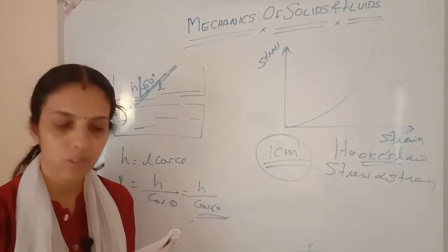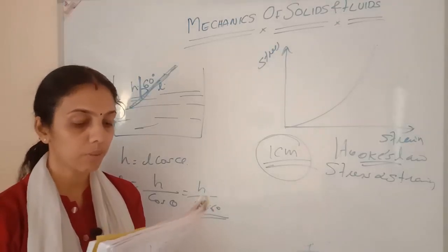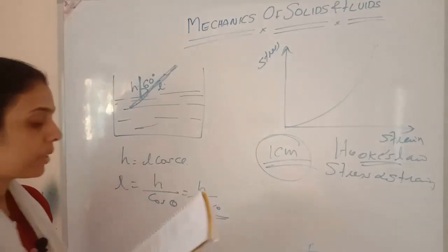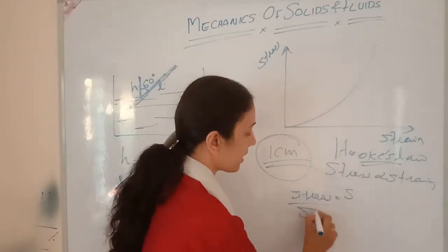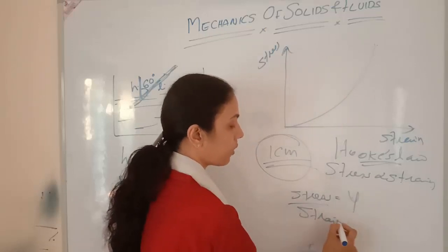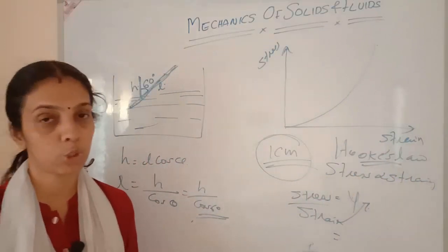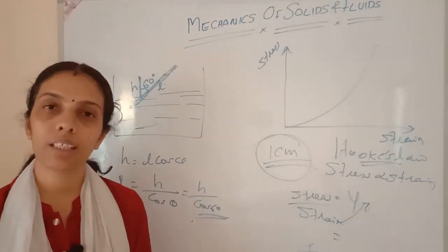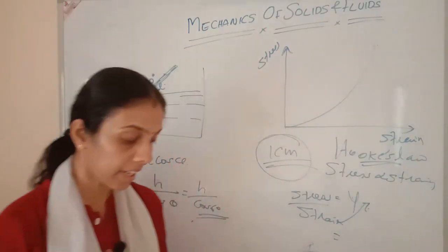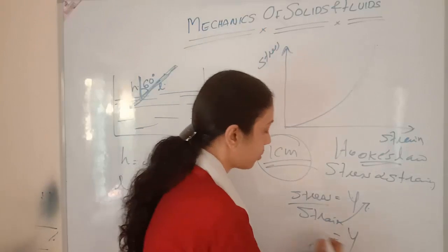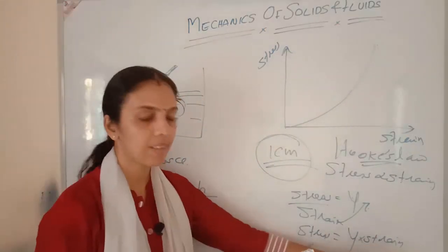Calculate the stress developed in a metal when it is strained by 30%. Given Young's modulus is 200 GPa. Stress = Young's modulus × strain. Young's modulus is 200 × 10⁹ Pa; strain is 30/100 = 0.3. So stress = 200 × 10⁹ × 0.3, which gives the stress in pascals.